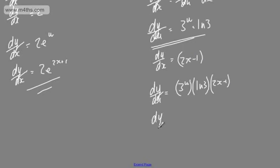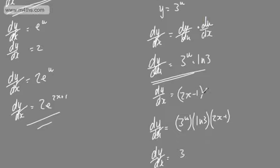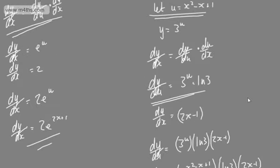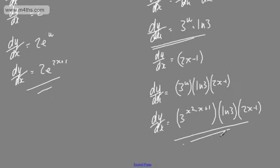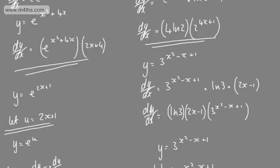Now we're still left with u here, so we write dy by dx and substitute it in. We've got 3 to the power of u, and u is x squared minus x plus 1 — so 3 to the power of x squared minus x plus 1, multiplied by the natural log of 3, multiplied by 2x minus 1. That's exactly the same result as when we did it informally. So there we go — let's move on and look at some of this in context.